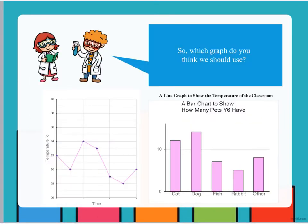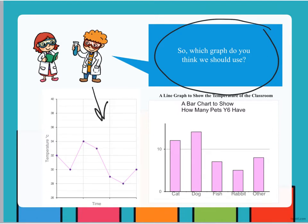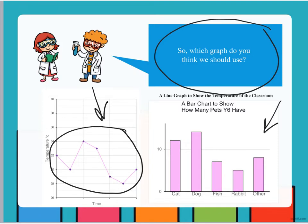So which graph do you think we are going to use? After reading the information on the line graph and the bar chart, you should now be thinking about which graph you're going to use according to the data or the results that you've collected. Remember that a line graph is used to show changes of measurement over time — that's called continuous data. The bar chart is used to show discrete data, so this information has no in-between value. You can see here that they're all separate, there's no in-between value.